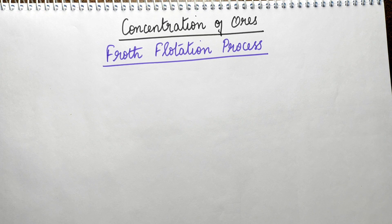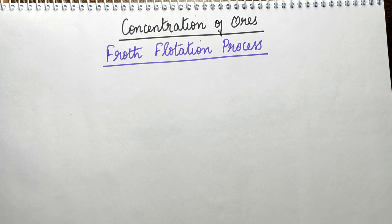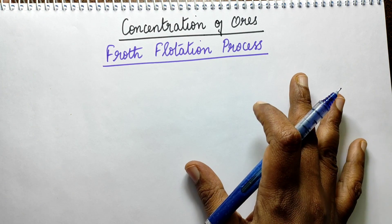So what is concentration of ores? It is the removal of the gangue particles present in the ores. Gangue particles are the impurities like non-metallic particles, rocky substances, siliceous matter that is present in ores. Ores are naturally occurring substances from where we can extract or separate the metal profitably and economically.